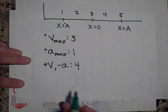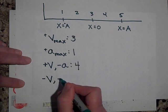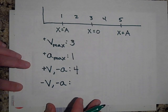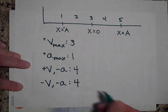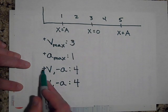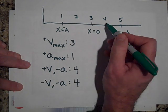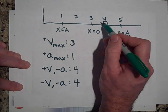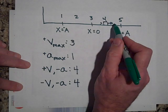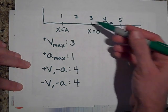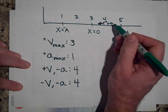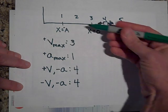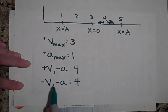Where will the object have a negative velocity and a negative acceleration? It turns out that's also region 4. For positive velocity and negative acceleration, the object is moving in the positive direction but slowing down — the spring is pulling it back. For negative velocity and negative acceleration, the velocity and acceleration are in the same direction, so it's actually speeding up.